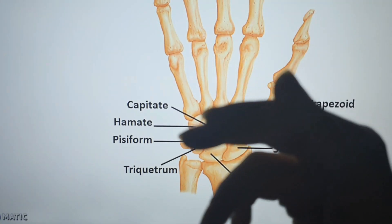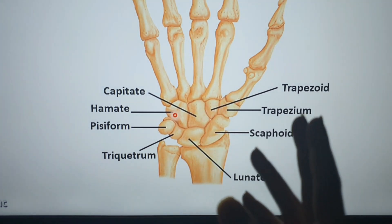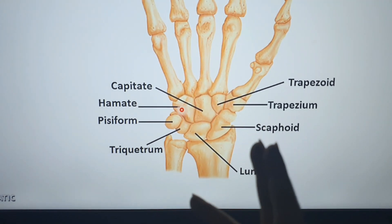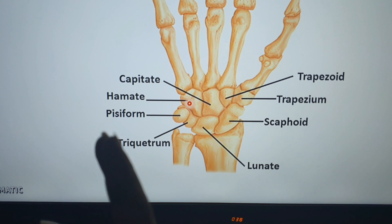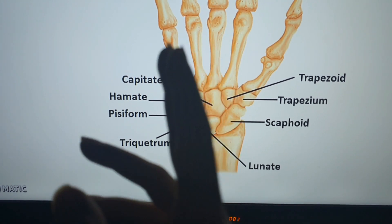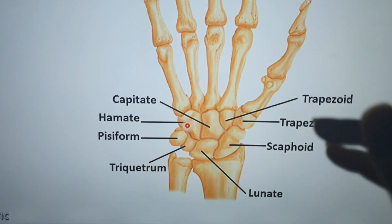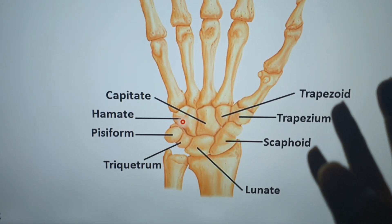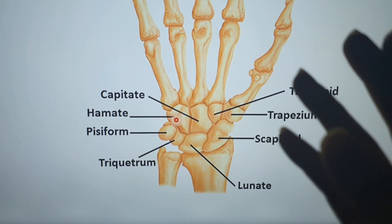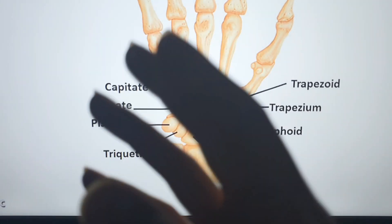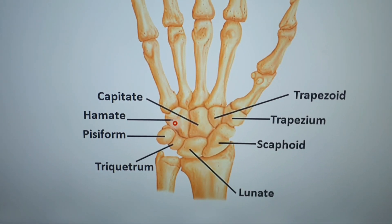To memorize the eight carpal bones from lateral to medial: scaphoid, lunate, triquetrum, pisiform — then for the distal row — trapezium, trapezoid, capitate, hamate.